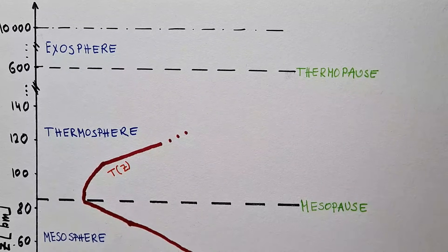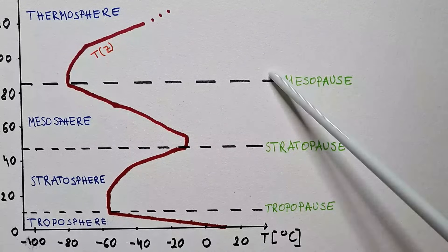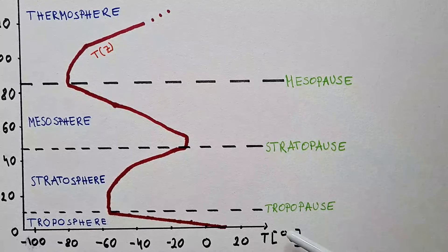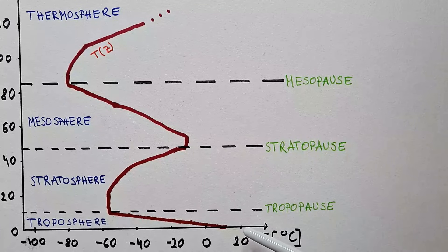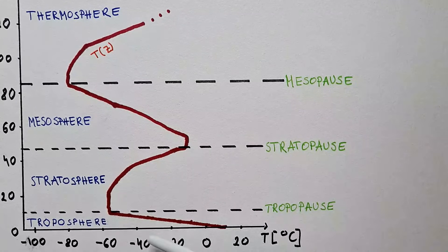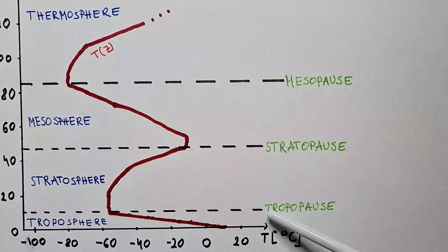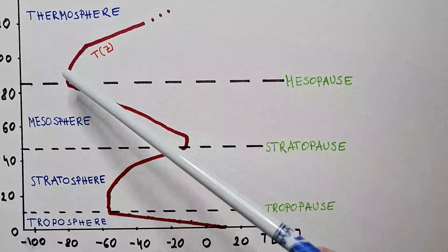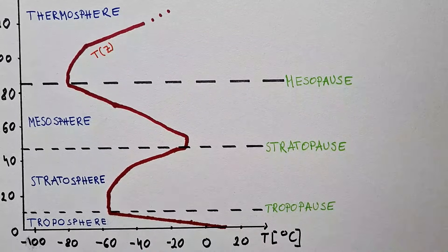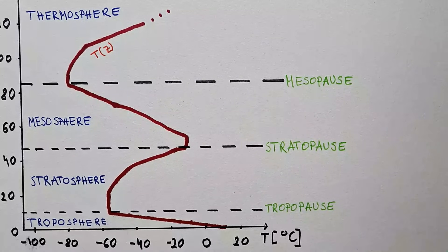Finally, notice that the transitions between different layers carry the suffix 'pause' — tropopause, stratopause, mesopause, and so on. These are the transitional layers where temperature undergoes pronounced changes with altitude. In these pause layers, temperature has very small variability with altitude, and we call these layers isothermal because there is no change of temperature with height.